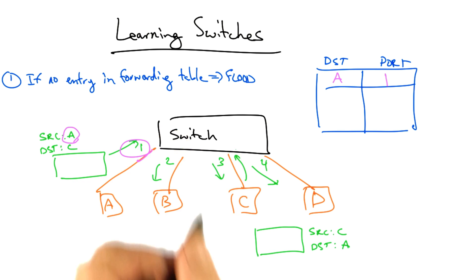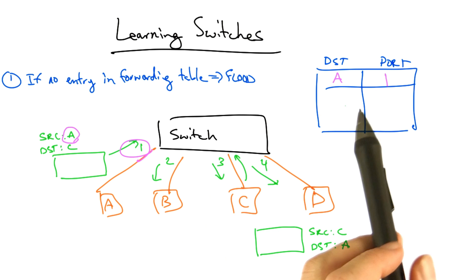So for example, when C replies with a frame destined for A, the switch now has an entry that tells it that it doesn't need to flood that packet but instead can simply send the packet directly to the output port.